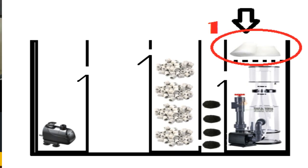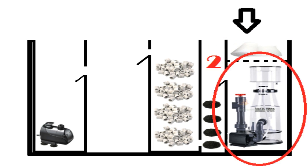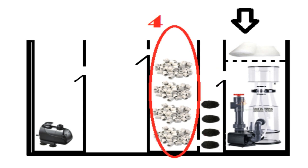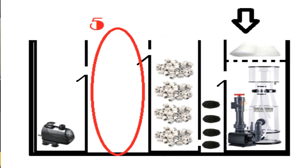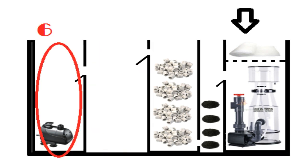Já no projeto marinho, passará primeiro pelo perlon, depois pelo skimmer, caindo para o carvão ativado ou purigem, passando por todas as cerâmicas, depois pelo refúgio, onde também podemos colocar a reposição de água doce e por fim o retorno para o aquário.